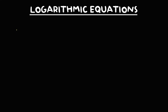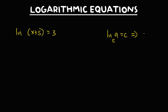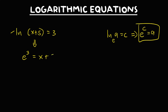If the given is ln (x + 5) equals 3, for natural log in exponential form, if we have ln a equals c, the base is equal to e. So we have e to the power c equals a. Therefore, for this natural log in exponential form, we have e to the power 3 equals x plus 5.